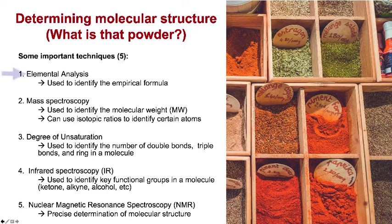One important technique is called elemental analysis. This technique is used to identify the empirical formula, that's the smallest whole number ratio of atoms. Even though only a very small amount of sample is required, you do have to burn the sample in order to determine which atoms are present.